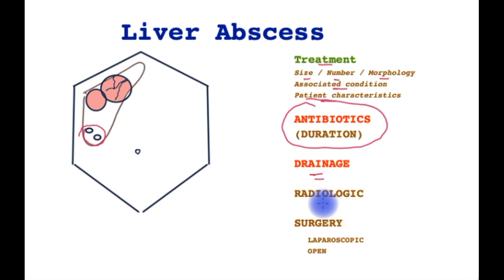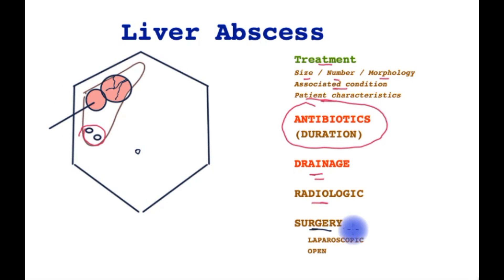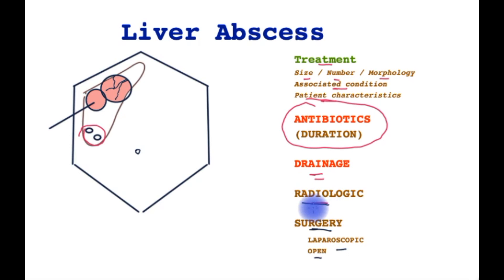Larger abscesses require a drainage procedure. Increasingly this is done under ultrasound or CT guidance, where a needle is inserted into the abscess cavity and the pus is drained, leaving a drain within the cavity which is frequently flushed and left in place until the abscess is fully drained. Larger multi-loculated abscesses may require multiple drains or surgical intervention. Surgery can be done with minimally invasive means such as laparoscopy, or less commonly through the open route. Increasingly, most abscesses are now drained with multiple placements of radiological drains, with surgery as a backstop.